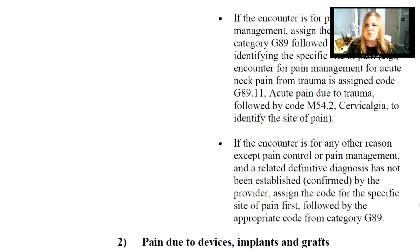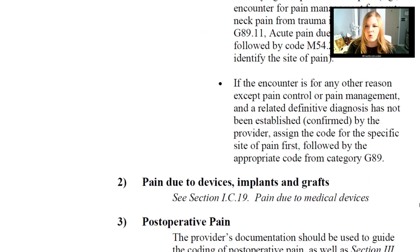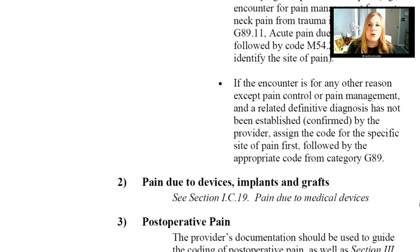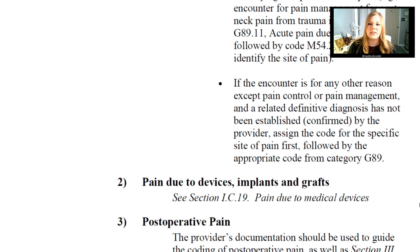If the encounter is for any reason except pain control or pain management, and a related definitive diagnosis has not been established by the provider, assign the code for the specific site of the pain first, followed by the appropriate code from category G89. Pain due to devices, implants, and grafts will be covered when we get to section C19, which is pain due to medical devices.